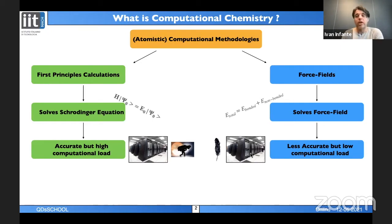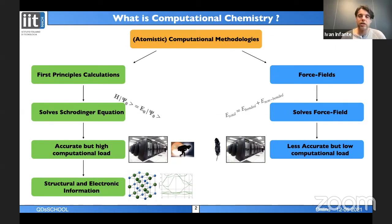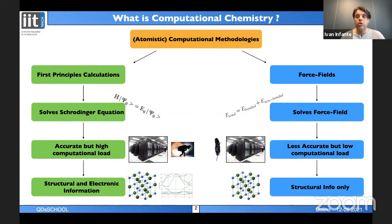From first-principles calculations you always get good accuracy in structural information—the geometry and positions of atoms—but you also get electronic information: the wave function, density of states, excitation energies, and many other electronic properties. With force field calculations you have all the structural information and can handle very large, realistic systems, but you lose the electronic information.